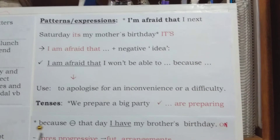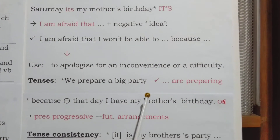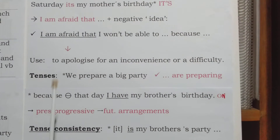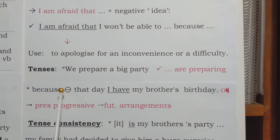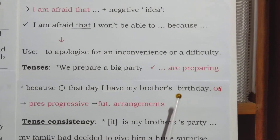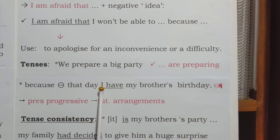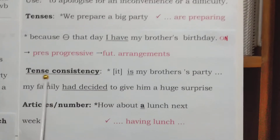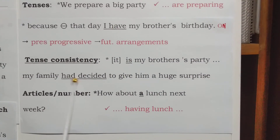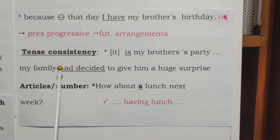Another thing you have to bear in mind is tenses. For example, here: 'we prepare a big party' — this is present simple, and it shouldn't be. It should be 'we are preparing.' Also, here the preposition 'on' is omitted. You have to use the present progressive for future arrangements. And regarding tense consistency, if you start with present, you should continue with present. Here it should be present perfect, not past perfect.